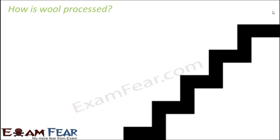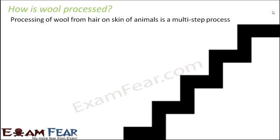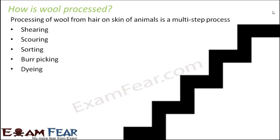Now let us look at the entire process by which wool is processed. Processing of wool is a multi-step process — it starts from obtaining it from the skin of animals, but we cannot directly use that for making sweaters. It needs to be processed through many steps before we receive it as wool yarns in shops. The steps are: shearing, followed by scouring, sorting, burr picking, dyeing, and finally rolling into yarns. Once we get the wool yarns, we start weaving them to make sweaters, clothes, jackets, and many other things.